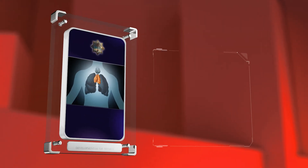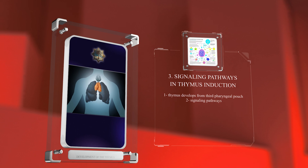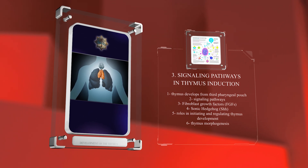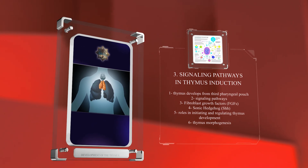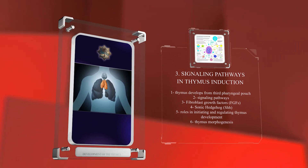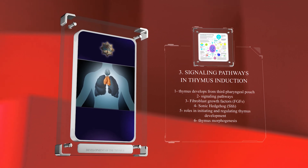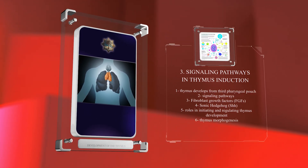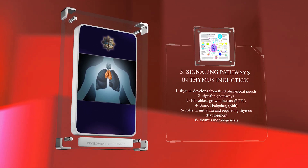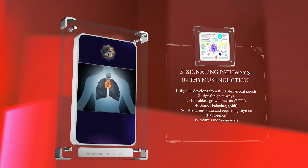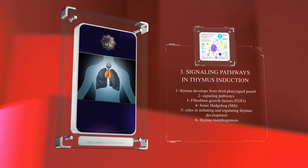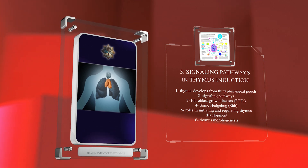The thymus develops from the third pharyngeal pouch through a network of signaling pathways. Fibroblast growth factors (FGFs) and Sonic Hedgehog (SHH) play important roles in initiating and regulating thymus development. Understanding these signals is crucial for understanding thymus morphogenesis.